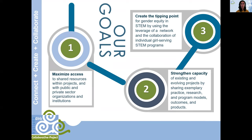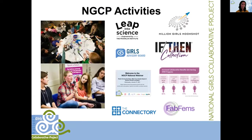NGCP also strengthens the capacity of programs by producing and sharing exemplary practices, research, and program models. When programs are stronger and more sustainable, girls and youth are better served. We distribute these resources in accessible formats such as train-the-trainer programs, partnerships, and online platforms. And finally, we leverage our network of girls-serving STEM programs, advocates, and youth so that together we can create the tipping point for gender equity in STEM.